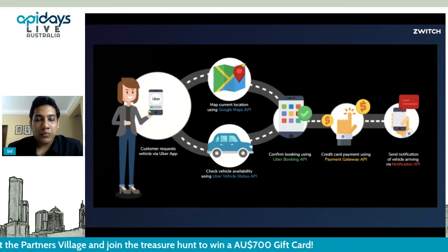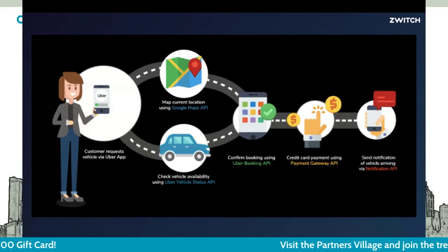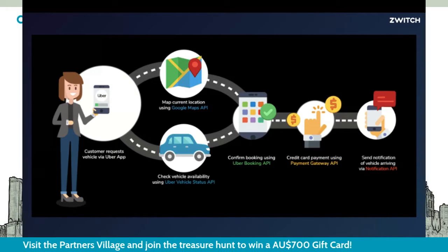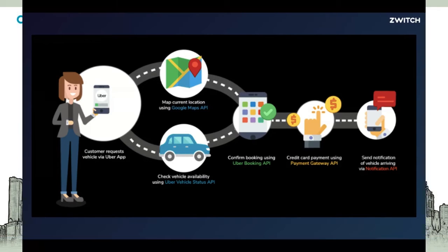Let's take an example to understand the API economy a little better. Consider a cab aggregator like Uber or its Indian counterpart Ola. These apps have disrupted the entire transportation industry without even creating the large part of the underlying technology powering them, which is Google Maps. They enabled customers to book a cab with ease in just a few smartphone taps, without having to build a mapping system, by simply combining Google Maps APIs with a proprietary product. Furthermore, you can check vehicle availability, confirm booking, make payments using a credit card, or receive notifications — all thanks to the APIs at work.